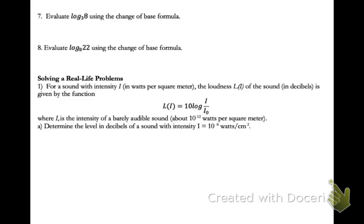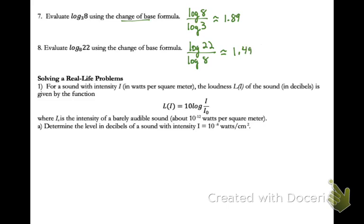Now let's use the change of base formula — grab your calculator. Log base 3 of 8 can be rewritten as log of 8 divided by log of 3, changing it to base 10. Rounding to two decimal places, that gives 1.89. That means if you take 3 and raise it to that power, you get really close to 8. For log base 8 of 22, rewrite it as log of 22 divided by log of 8, and round to 1.48.